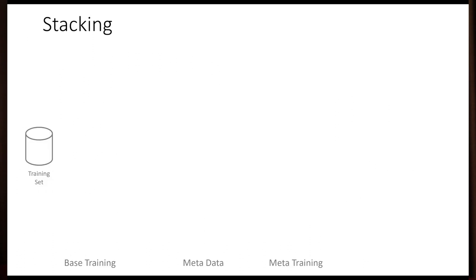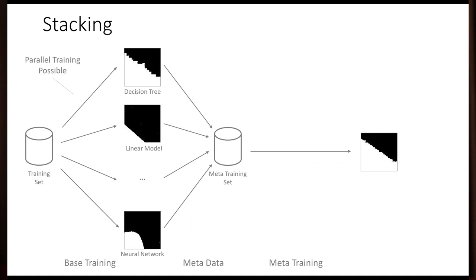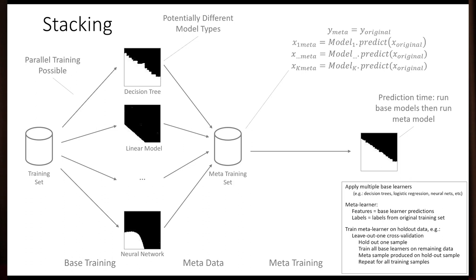Stacking is another approach where you learn a set of base models on the original problem, and then you learn a meta model on the outputs of those base models. So, the meta training set has one feature per base model where that feature is the output of the base model, and the label that it's trying to predict is the original label. It's important when you learn this that you use holdout data so you don't learn the meta model on the same data that was used to train the base models, or else, you won't generalize well.